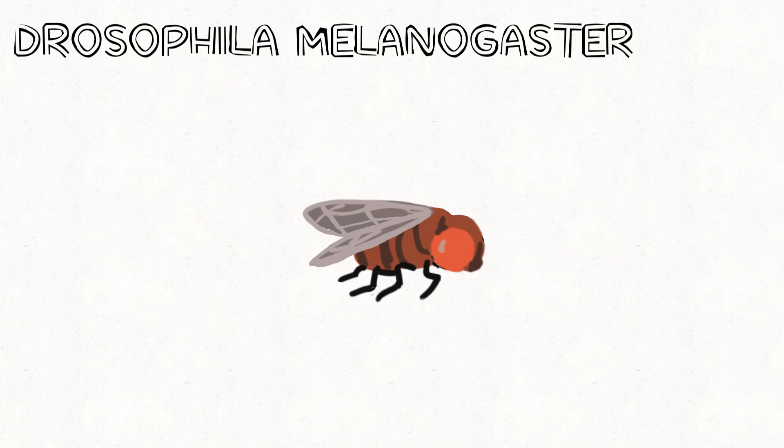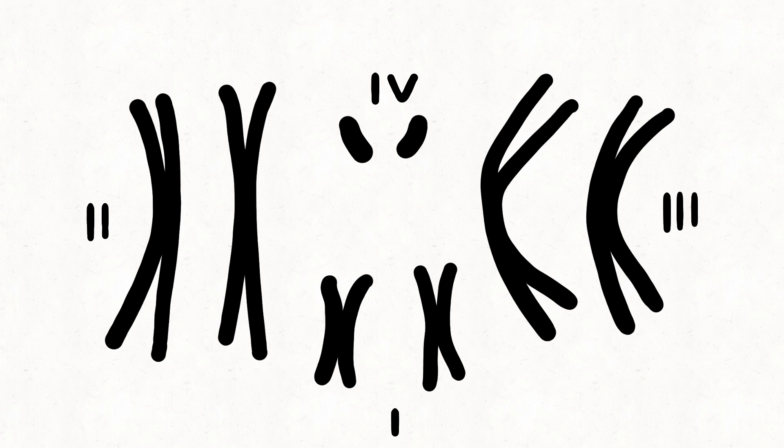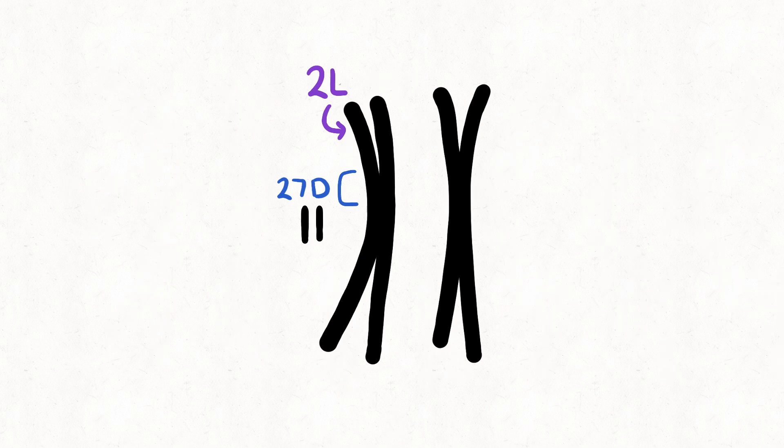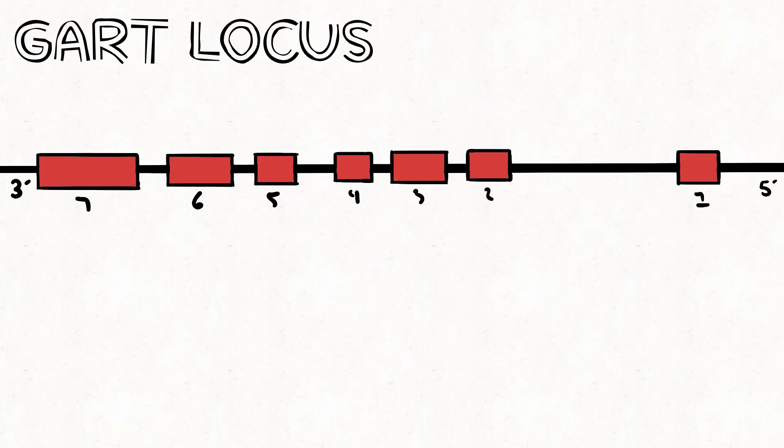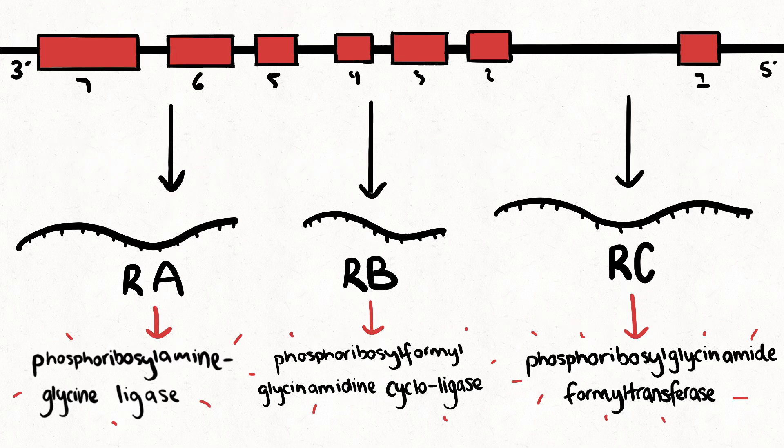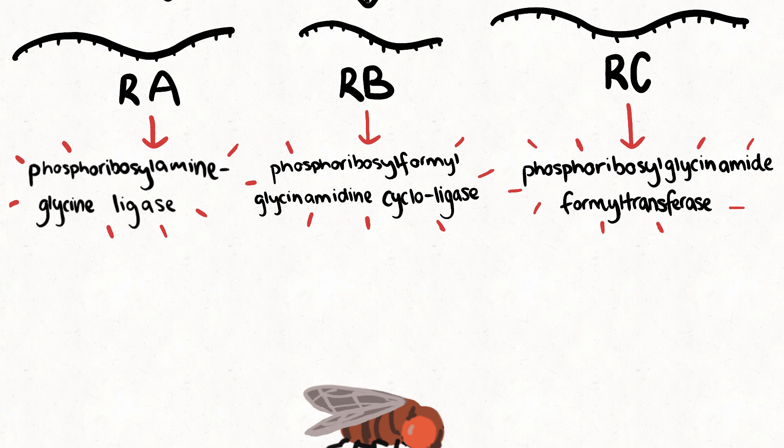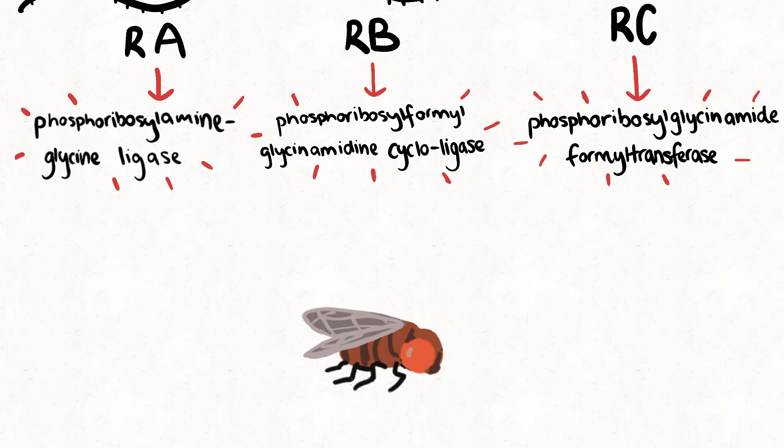They started by mapping the GART locus, an area on the Drosophila melanogaster chromosome 2L27D, which, from their previous research, had been found to encode three enzymatic activities involved in the purine pathway, making it an essential housekeeping gene for basic organism function.